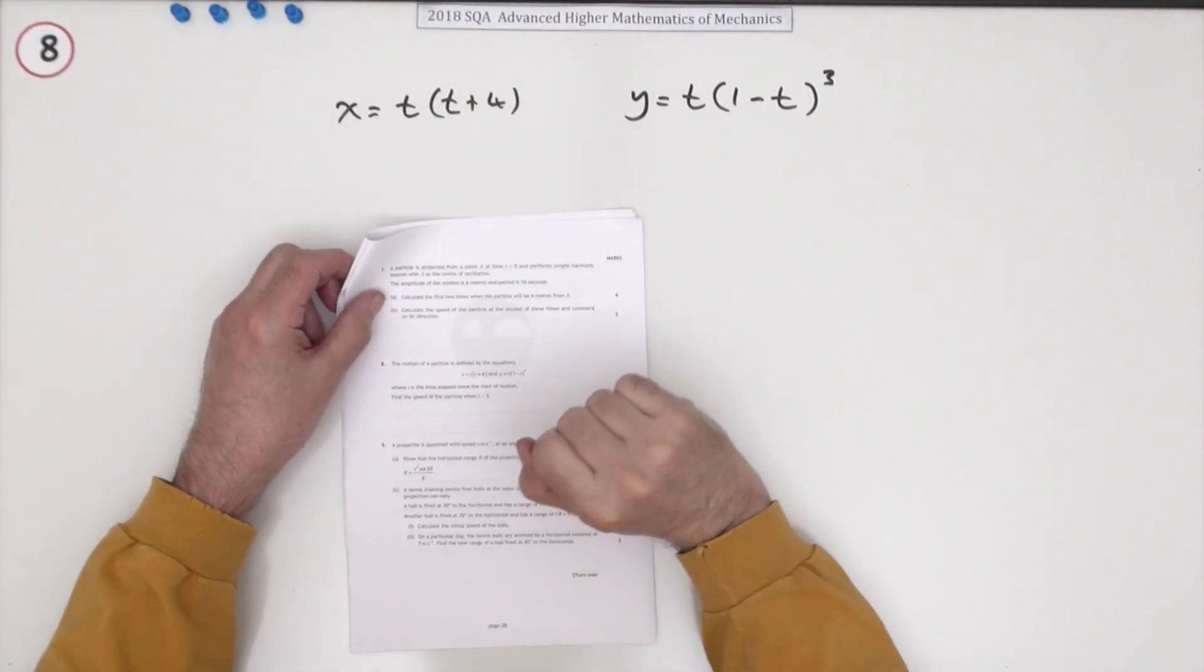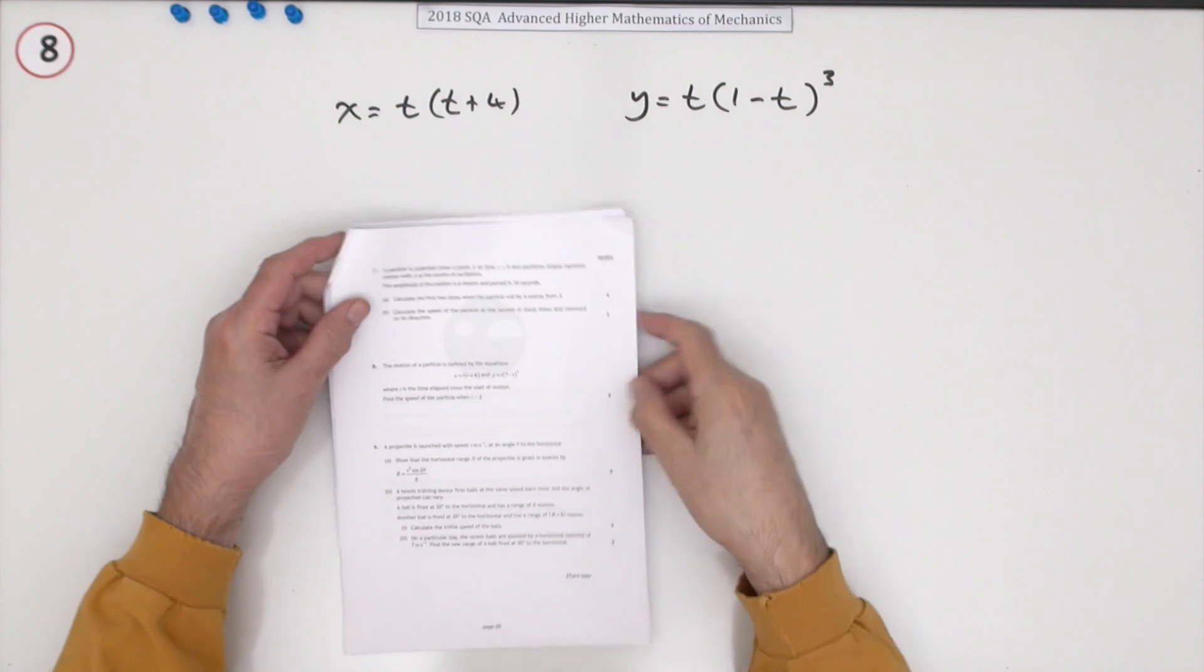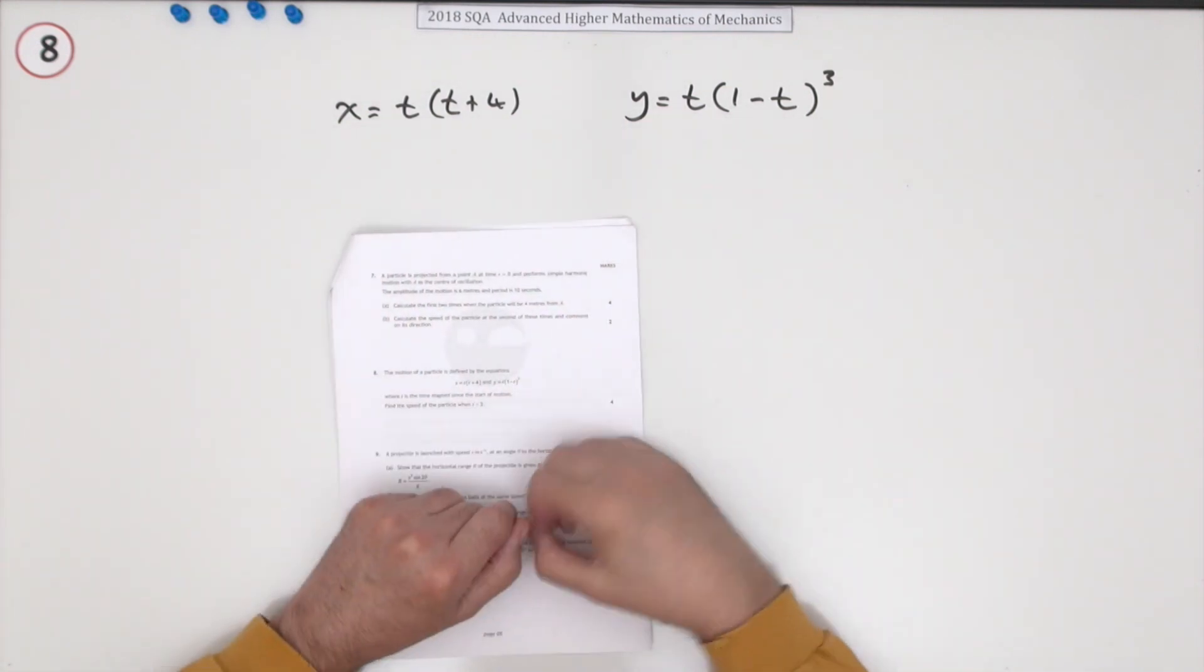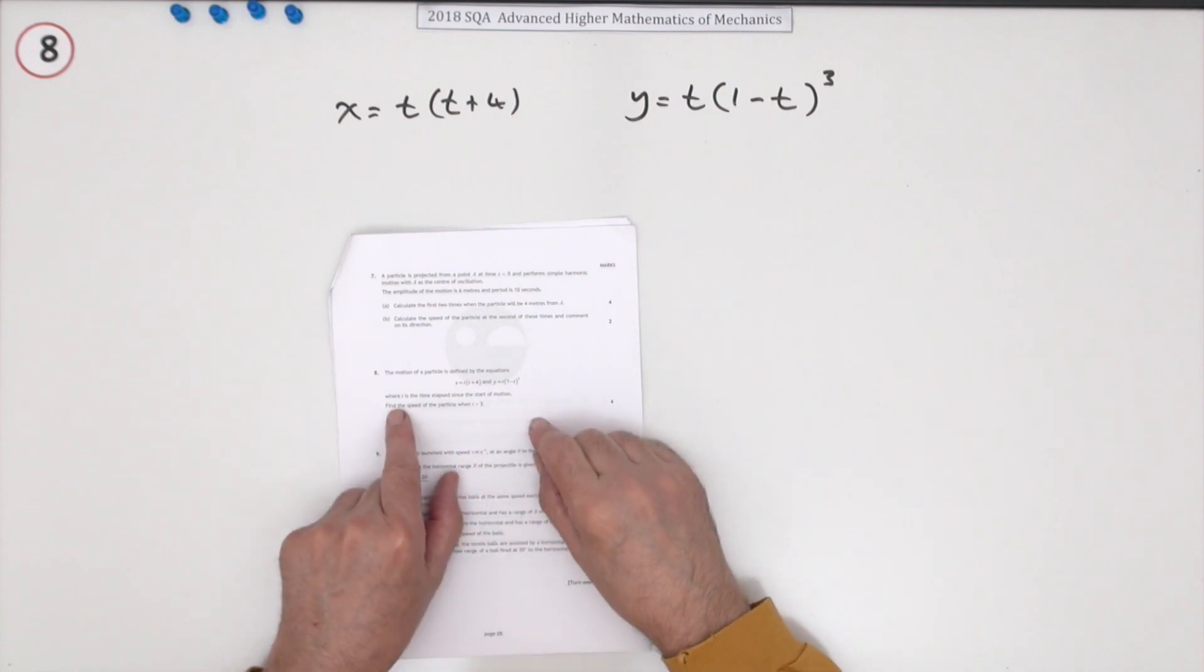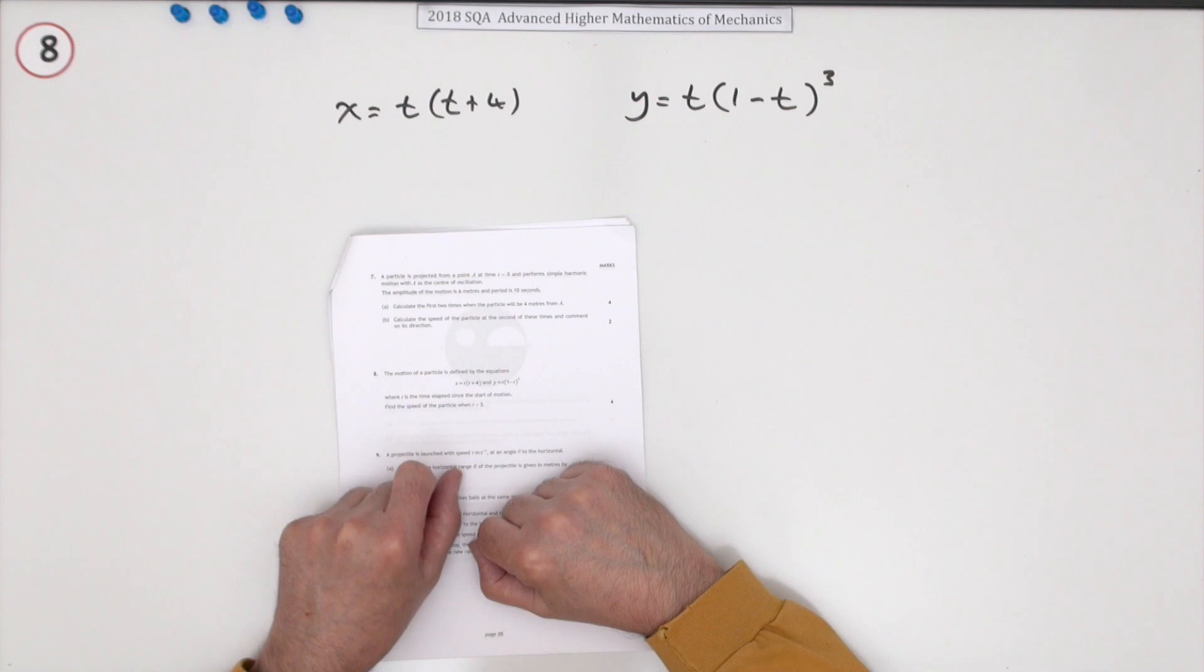Number eight from the 2018 Advanced Higher Mathematics of Mechanics. A little format question here, and you recognize them immediately as parametric equations. It's asking for the motion of a particle described by these parametric equations here.